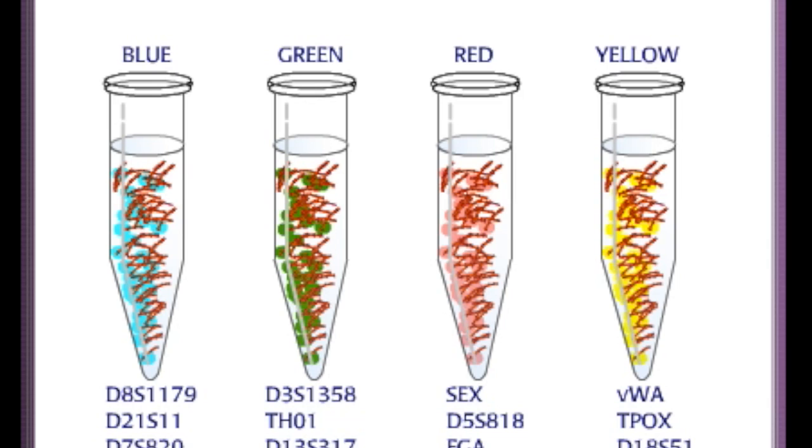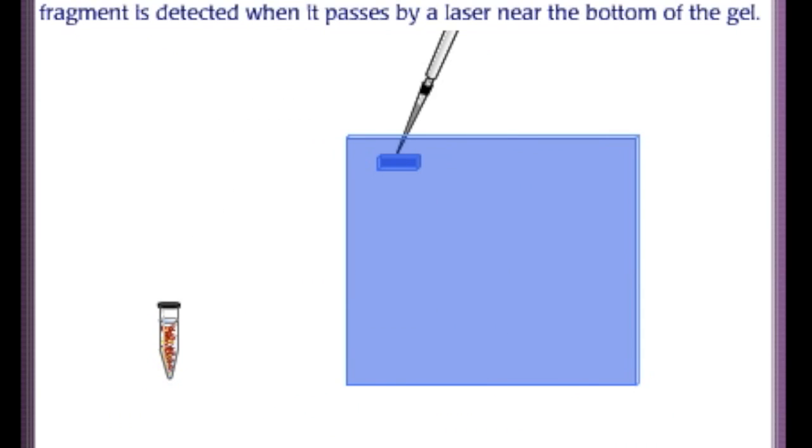Here, there are 3 or 4 different polymorphisms labeled with each of 4 fluorescent dyes: blue, green, red, yellow. Amplified DNA fragments are loaded into one lane of polyacrylamide gel, which can separate alleles that differ by only 4 to 5 nucleotides.